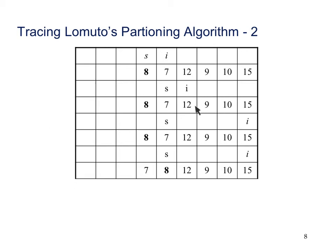Check the next position. That's 12. That's bigger than 8. 9. That's bigger than 8. 10. That's bigger than 8. 15. That's bigger than 8. And then finally i basically drops off the end. And so now all we need to do is swap the pivot element with the item that's contained in the s slot. And so we get this picture where the partitioning element now has elements that are smaller than it to its left and only elements that are bigger than or equal to it to its right.